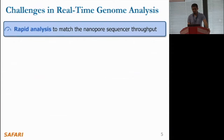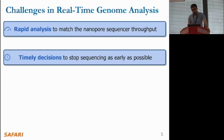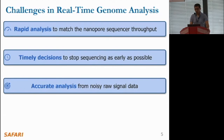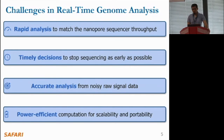First, we need to maintain rapid analysis to match the throughput of a nanopore sequencer, which is essential for enabling real-time analysis. Second, we need to make timely decisions to stop sequencing as early as possible; otherwise unnecessary sequencing can waste time, power, and money. Third, we need to ensure accurate analysis from noisy raw signal data. Noise in raw signals can cause variations even among signals from identical nucleotides, despite raw signal data holding richer information than individual bases. Fourth, we need to achieve efficient computation for scalability and portable sequencing on resource-constrained devices.